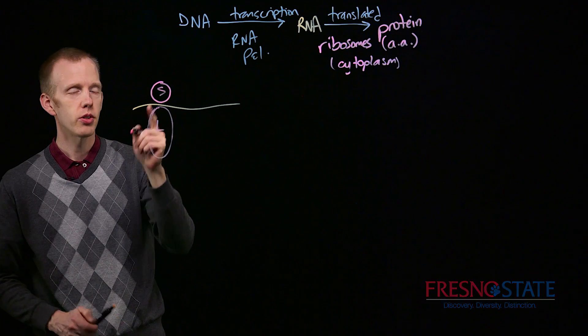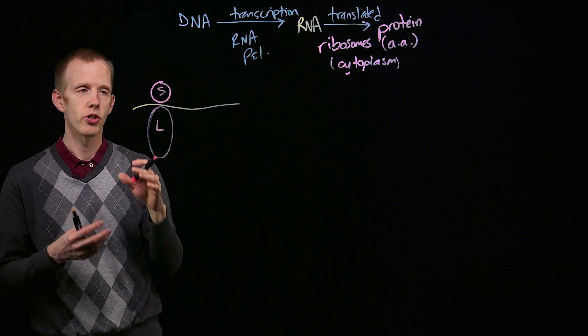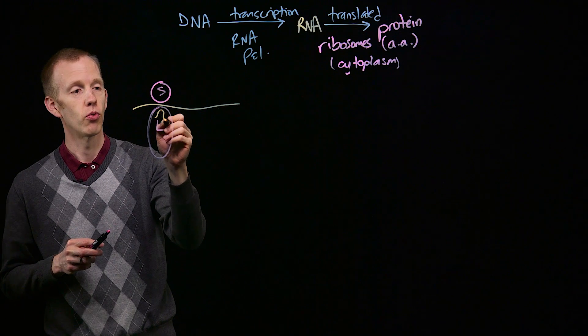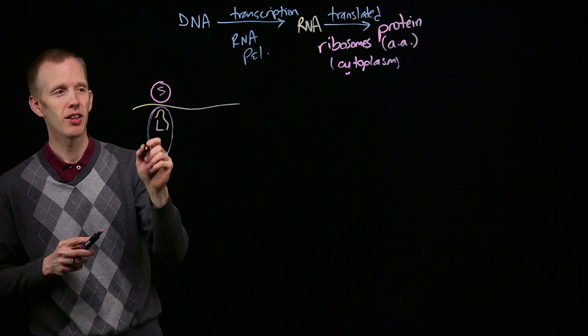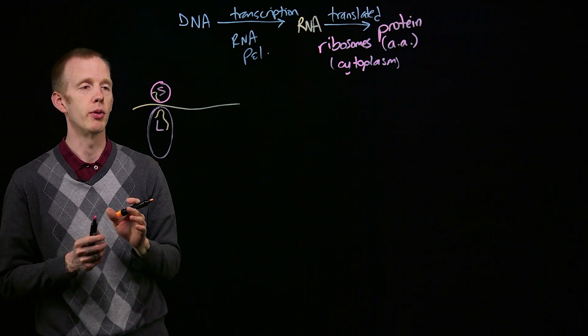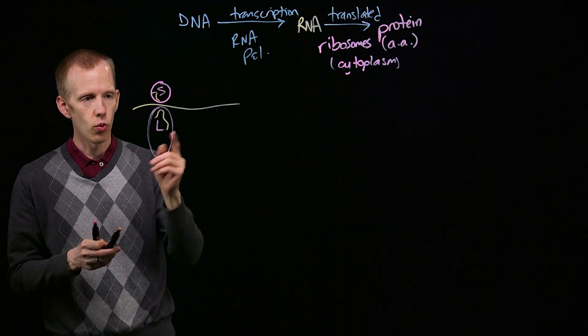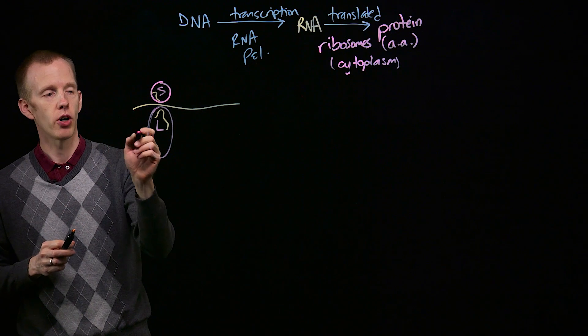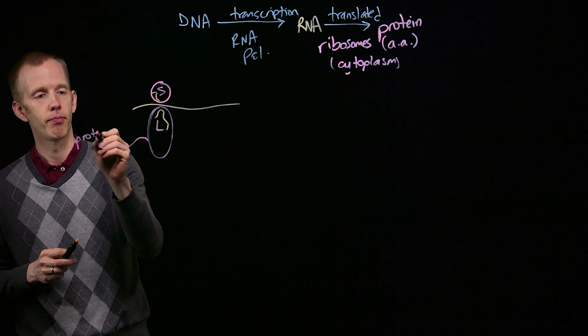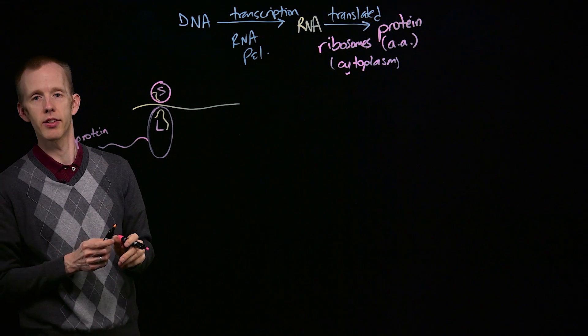Those two proteins together, the large and small subunits, which by the way have ribosomal RNA incorporated in them which do some structural things for the ribosomes, read the messenger RNA molecule and produce the protein. So this is where protein synthesis happens.